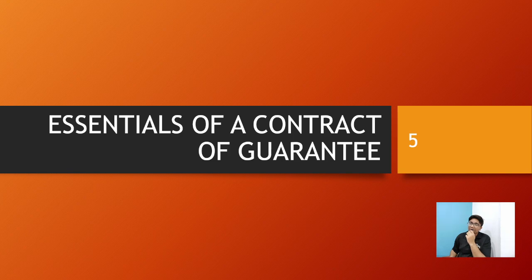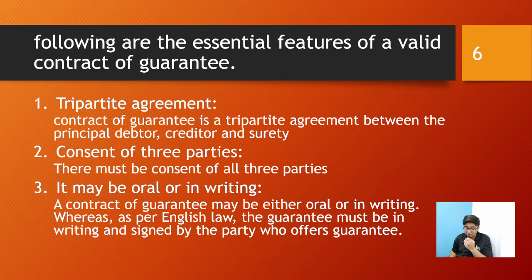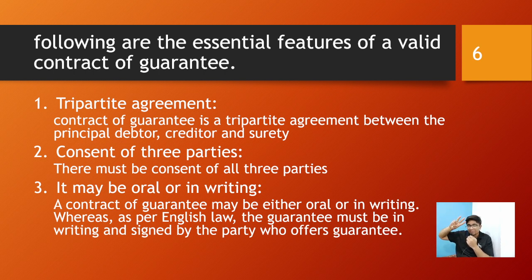Now, what are the different essentials of a contract of guarantee? The first essential is a tripartite agreement — three agreements. We already discussed these three agreements: triplication of agreements. So a contract of guarantee is a tripartite agreement between the principal debtor, creditor, and surety.